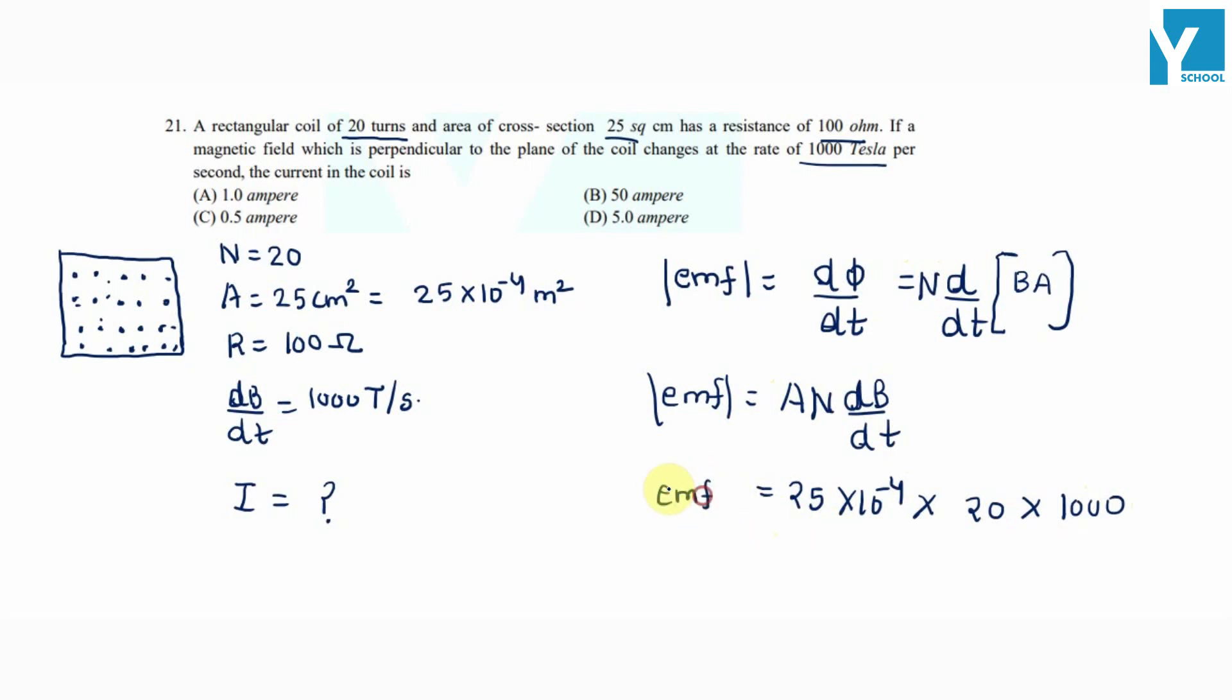This is the induced EMF. Current will simply be EMF divided by the resistance, induced EMF by resistance. So this will be equal to, on putting the values, 0.5 amperes.